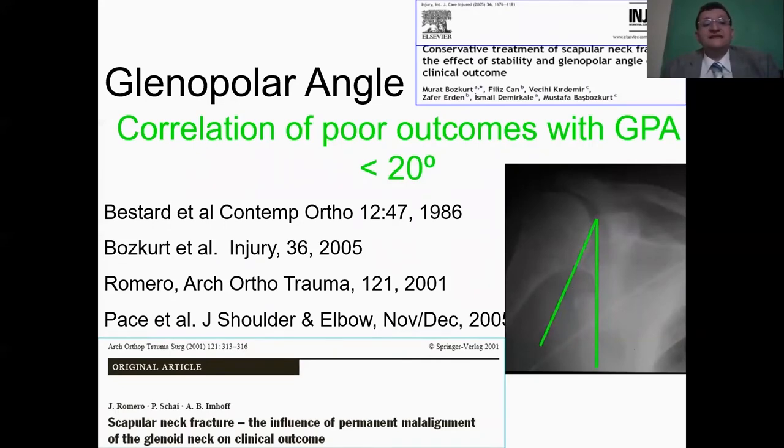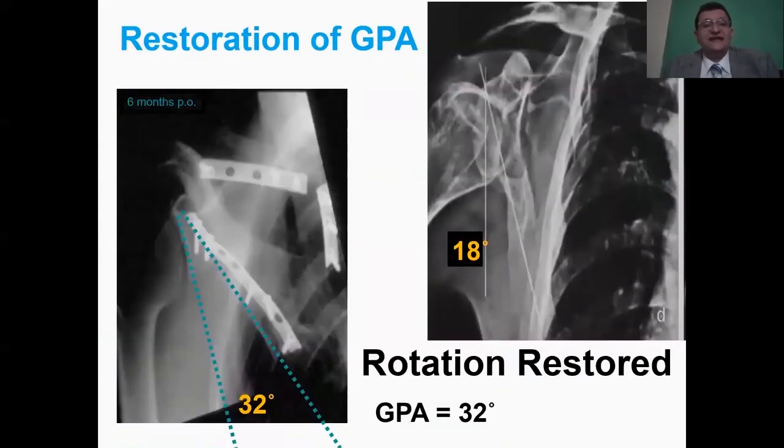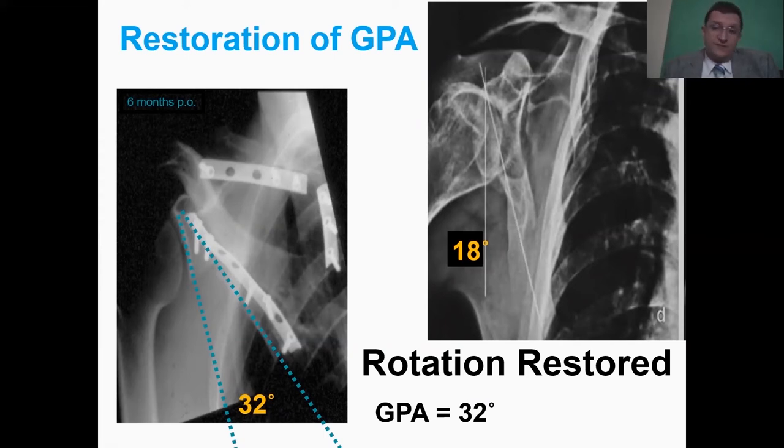So many studies have correlated poor outcome with glenopolar angle less than 20 degrees. Restoration of the glenopolar angle is important goal for the surgical management of fractures of the body of the scapula.